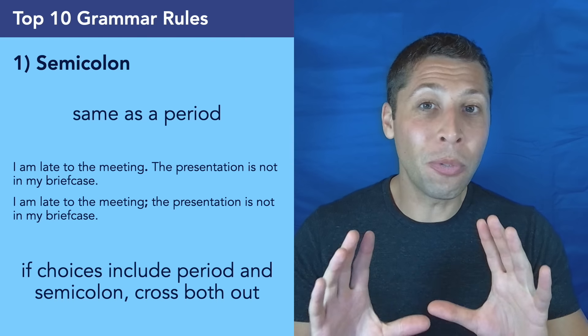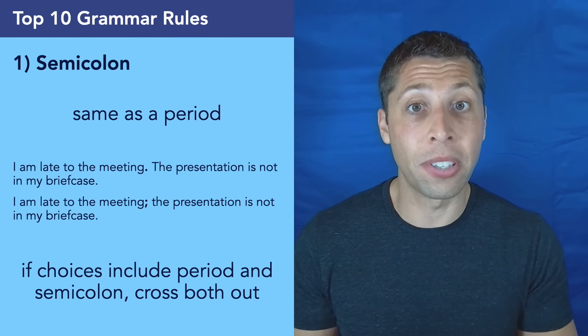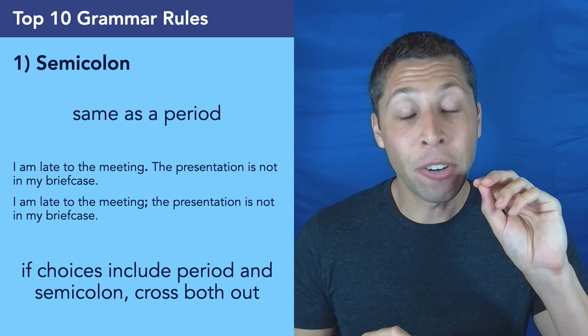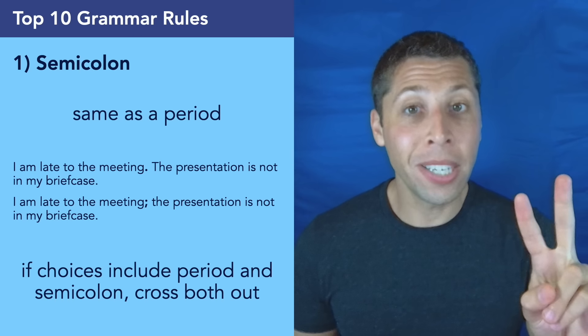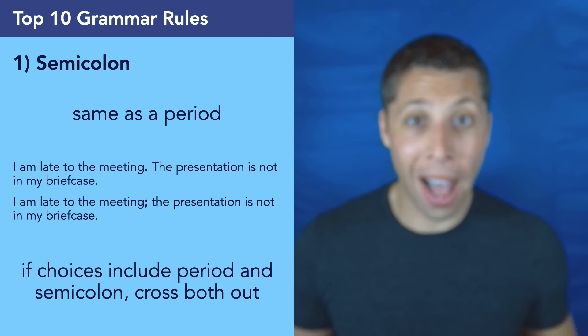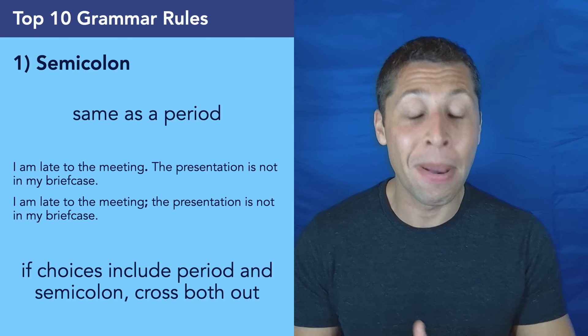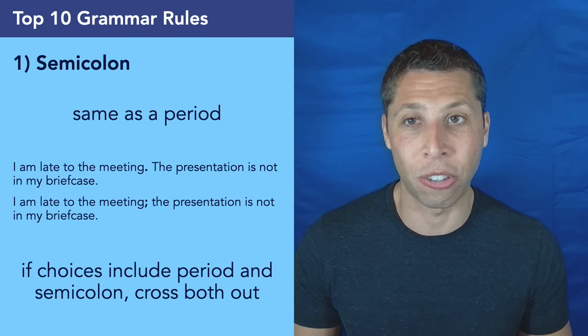So the most useful way to think about a semicolon on the SAT is to think about the multiple choices that you're going to get. If you have two answer choices and they're the same exact wording, but one is a semicolon and one is a period, cross them both out. They both are saying the exact same thing because a semicolon is a period. So if they both are the same, they cannot both be right. So they must both be wrong. And that now doubles your odds of getting a question right.